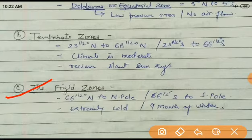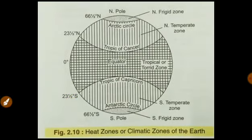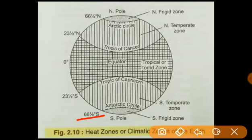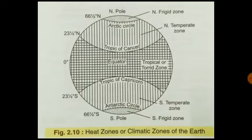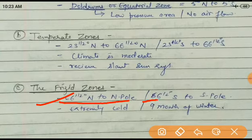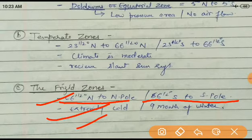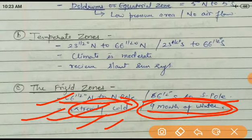The Frigid Zone is, by the name, completely frozen — extremely cold. It lies between 66.5° South and the South Pole, or we can say from the Antarctic Circle to the South Pole. Similarly, from 66.5° North to the North Pole, or from the Arctic Circle to the North Pole. This area gets sunlight for only about two to three months, so nine months are completely winter. It is a completely frozen area with an extremely cold season.